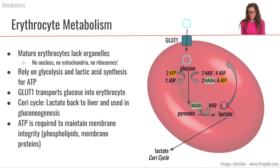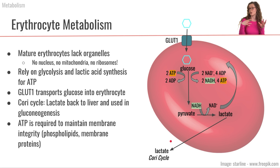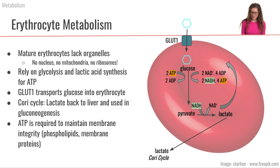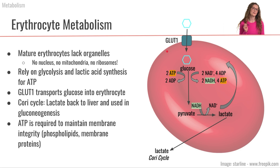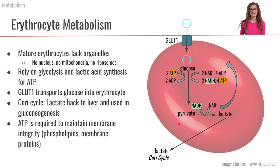The erythrocyte secretes the lactate out into the bloodstream, where it travels to the liver. The liver can then use that lactate for gluconeogenesis to produce more glucose. This is called the Cori cycle, which we'll discuss more later. The lactic acid system is how erythrocytes fulfill their ATP needs.